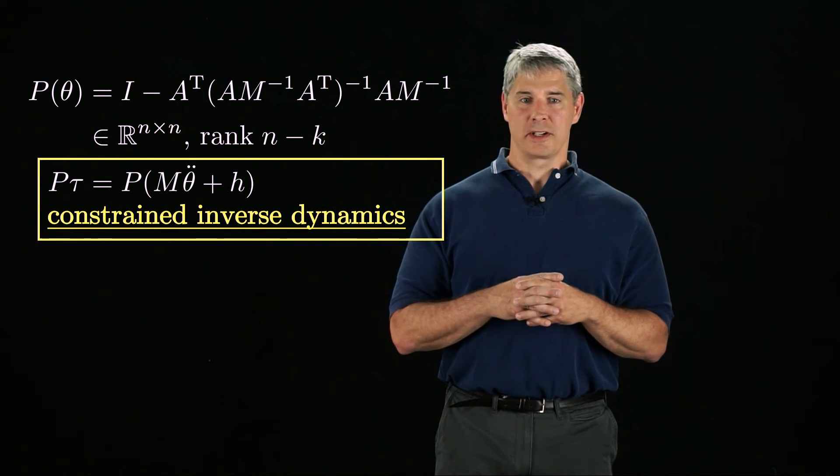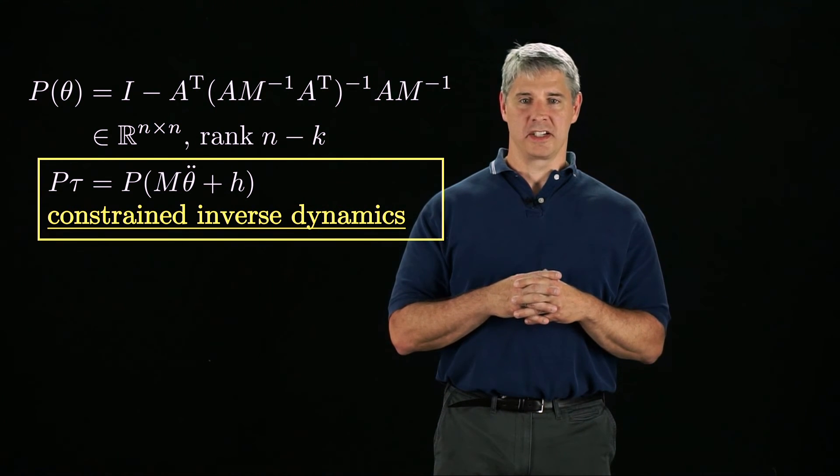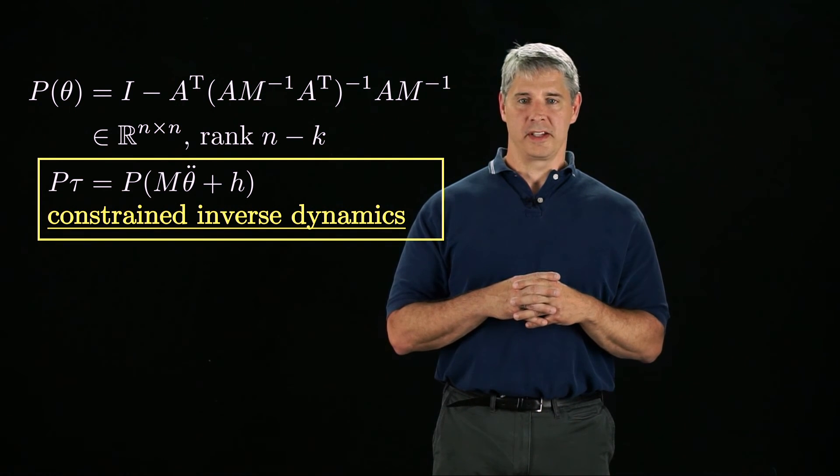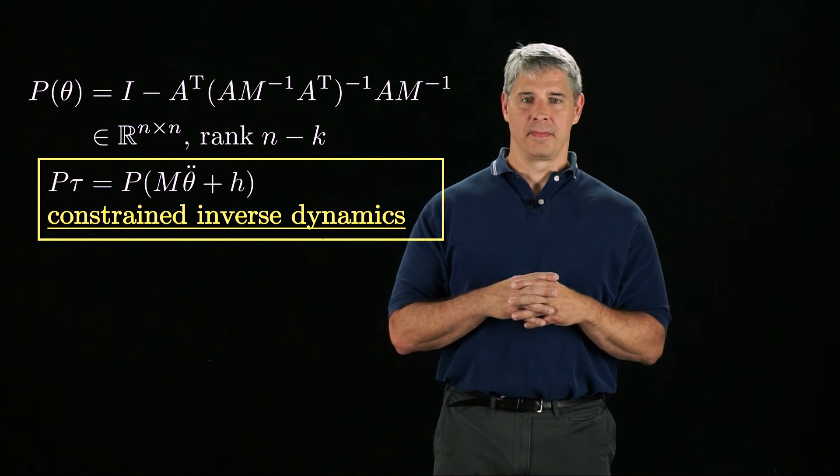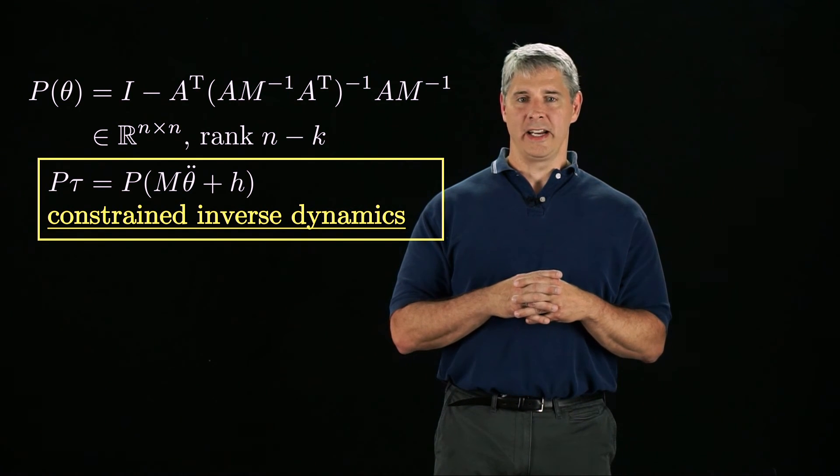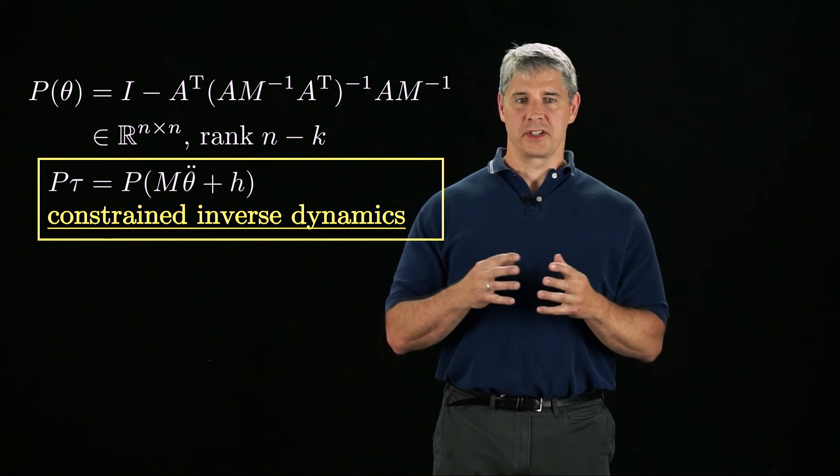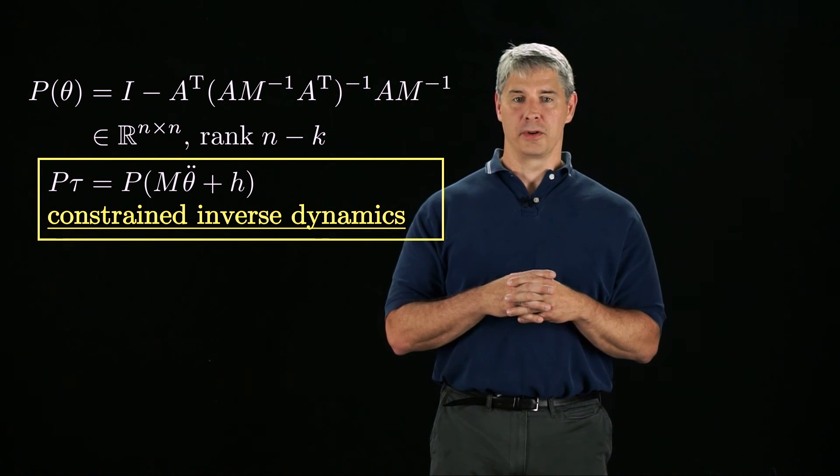To solve the inverse dynamics, we plug in the joint positions, velocities, and accelerations on the right-hand side to calculate the joint torques that create the desired joint accelerations. To this solution, we can add any joint torques of the form A transpose lambda, which create forces against the constraints and do not affect the motion of the robot.